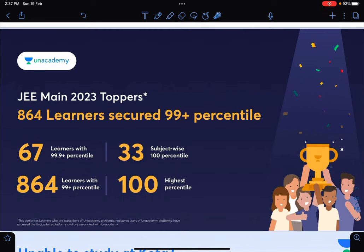This is the result of Unacademy in JEE Main 2023. You can see there are 67 learners with 99.9 plus percentile, and there are 33 subject-wise 100 percentiles, out of that 28 are in physics.